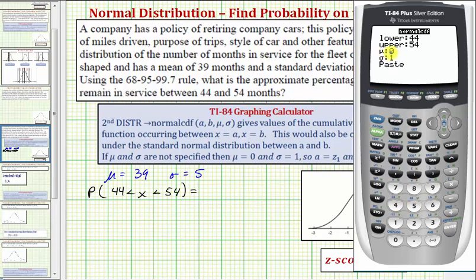Mu, the mean, is 39. So 39, enter. Sigma, the standard deviation, is five. So five, enter.